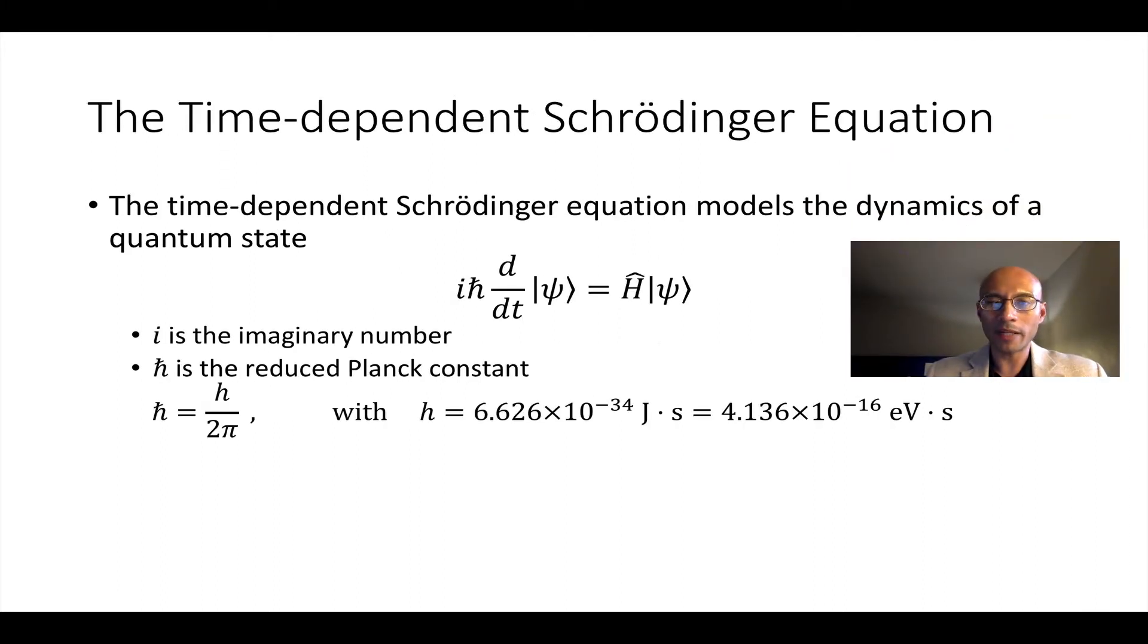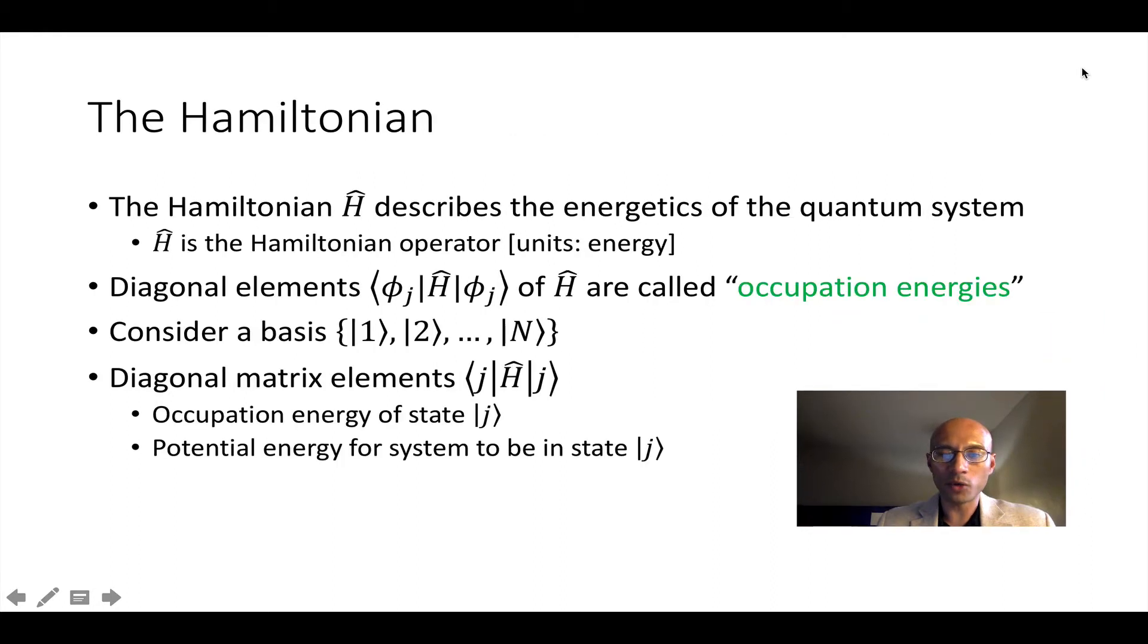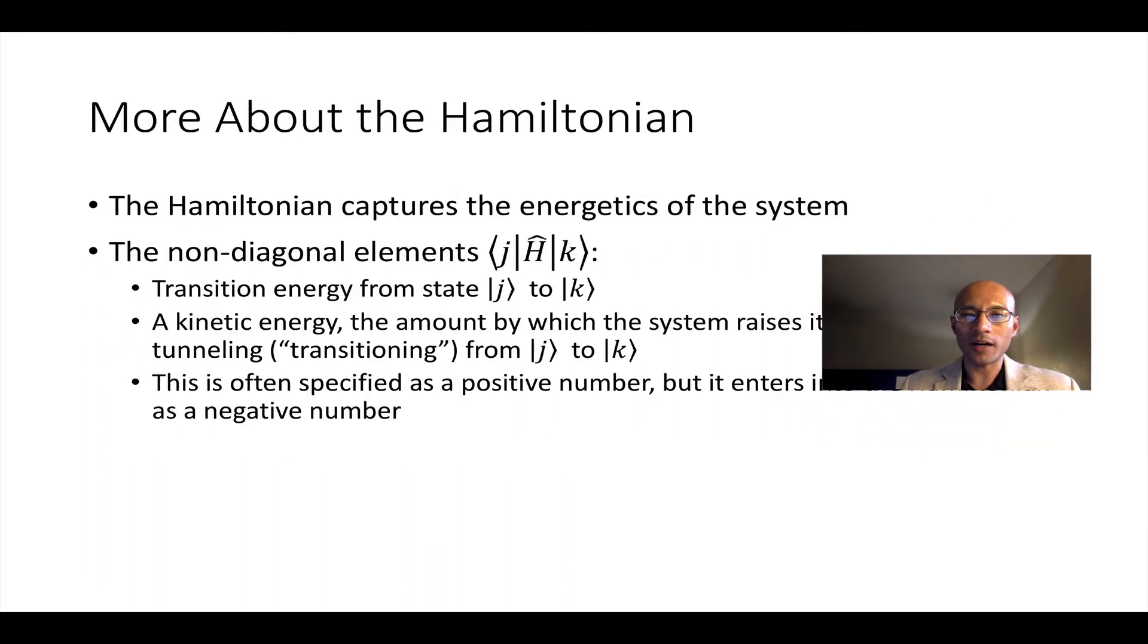Now, let's look at the time-dependent Schrödinger equation. It takes this form, where we have the imaginary number, H-bar, the reduced Planck constant, and the derivative of ket psi is equal to the Hamiltonian operator acting on ket psi. This is a very important equation in quantum mechanics. It models the dynamics of a closed system. Therefore, H is a very important operator. The Hamiltonian H describes the energetics of the quantum system. So the Hamiltonian has units of energy, and the diagonal elements of the Hamiltonian are called occupation energies. If we have some basis like this, this diagonal element, J-H-J, is the occupation energy of state J. That is, what is the potential energy of the system to be in state J?